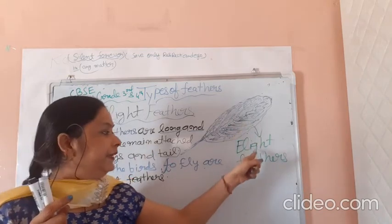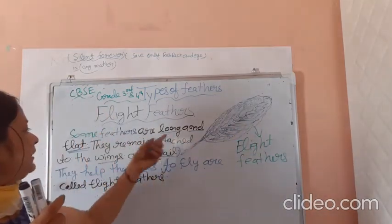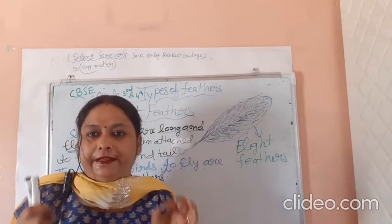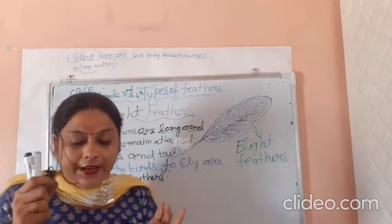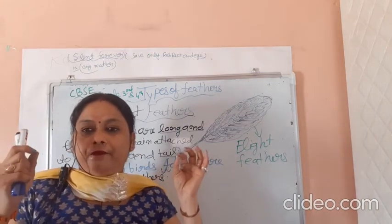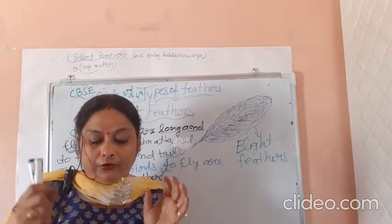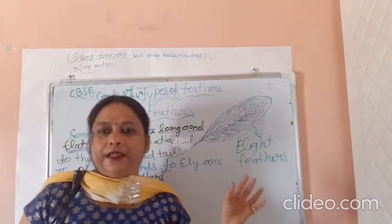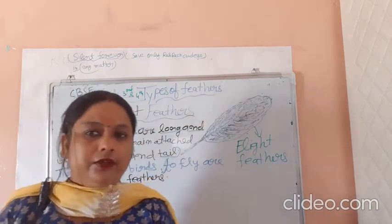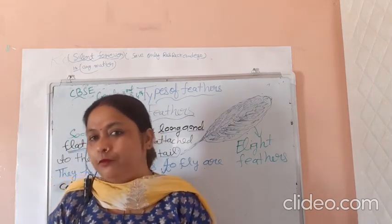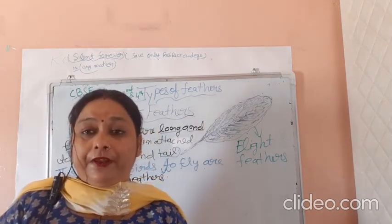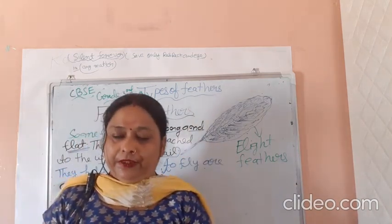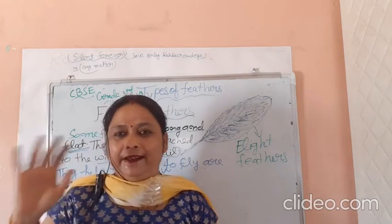So this is a little description of flight feathers. Flight feathers are long and flat — as shown on your screen — and remain attached to the wings and tail. They help the bird to fly and are called flight feathers. We will end this video here. Please subscribe, like, and share for upcoming notifications about down feathers and body feathers. Goodbye, take care.